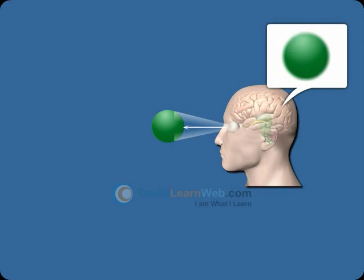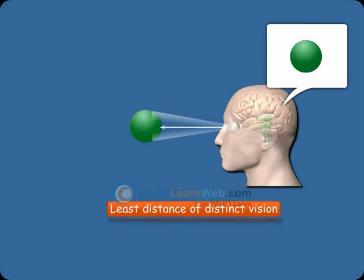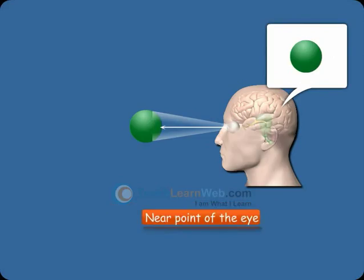The minimum distance at which objects can be seen distinctly without strain is called as least distance of distinct vision. It is also called as near point of the eye.